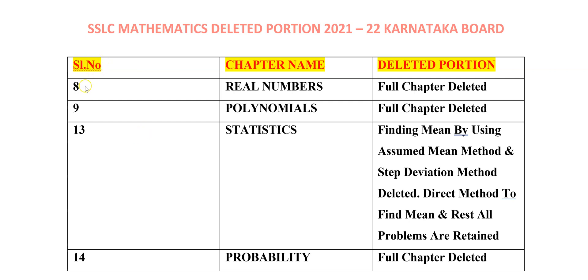As you can see here, chapter number 8 in Mathematics — Real Numbers — this full chapter is deleted. And then chapter number 9, Polynomials — even this complete chapter is deleted.